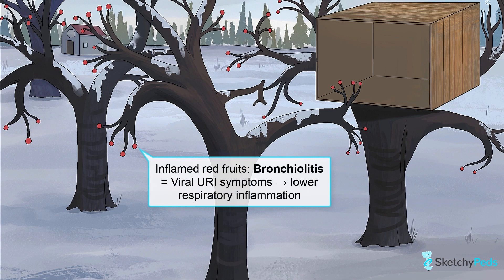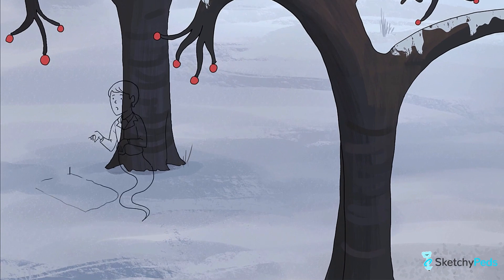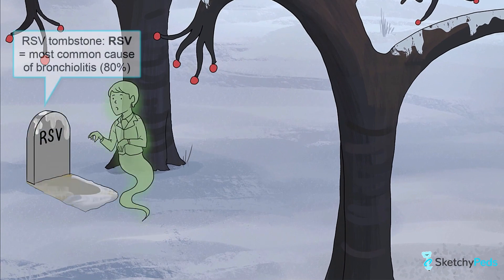Bronchiolitis, depicted by the inflamed red fruits on the tips of the bronchial trees, is a viral process characterized by initial upper respiratory symptoms, such as rhinorrhea and nasal congestion, that progresses to a prominent lower respiratory inflammatory process. The most common cause of bronchiolitis, seen in 80% of patients, is respiratory syncytial virus, or RSV.